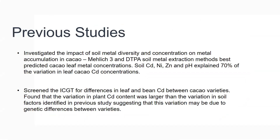In this project we completed and published two studies. The first study investigated the impact of soil metal diversity and concentration on metal accumulation in cacao. We used five soil metal extractants to screen a number of farms in Trinidad, and found that Melec3 and DTPA soil metal extractants were best at estimating the plant available soil cadmium concentrations. We also found that soil cadmium, nickel, zinc, and pH explain 70% of the variation in leaf cacao cadmium concentrations.